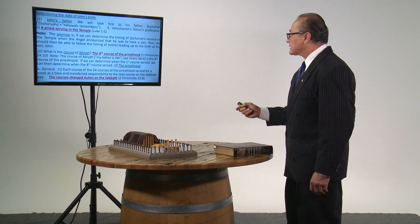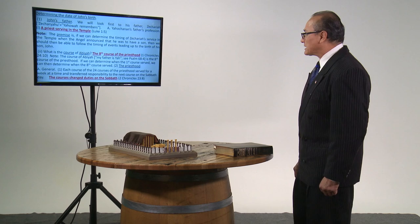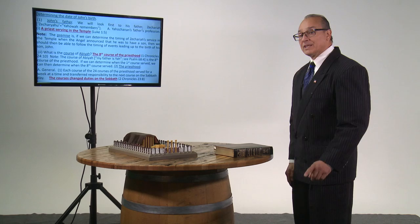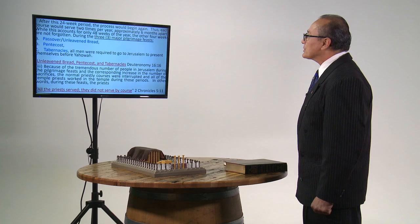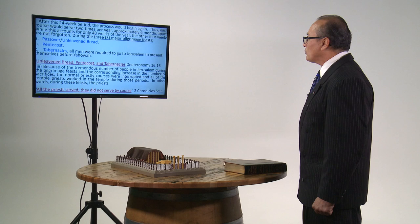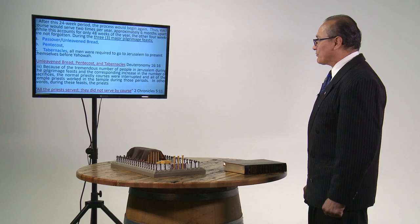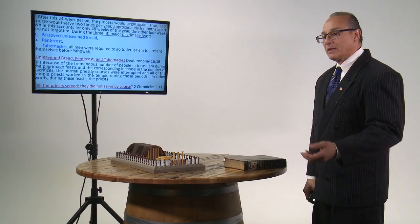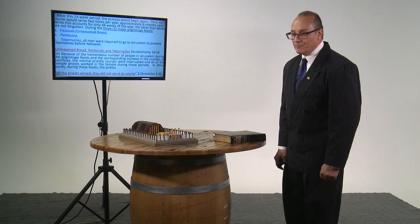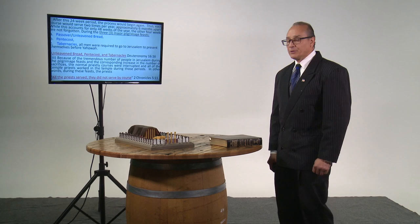When the sanctuary was built and given to Moses, those priests would walk in wearing white. Zechariah would walk into the sanctuary to the holy place. His job was to make sure he had the incense burning. If we can determine when the first course served, we can then determine when the eighth course served. Each course of the 24 courses of the priesthood served for a week at a time and transferred responsibility to the next course on the Sabbath day. The courses changed duties on the Sabbath. 2 Chronicles 23:8. After this 24-week period, the process would begin again. Thus, each course would serve two times per year approximately six months apart.